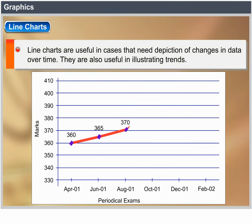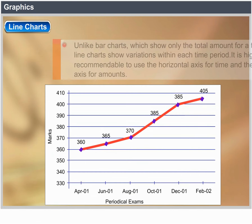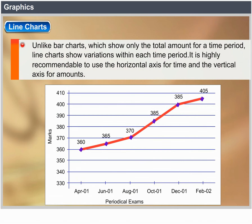Line Charts. Line charts are useful in cases that need depiction of changes in data over time. They are also useful in illustrating trends. Unlike bar charts, which show only the total amount for a time period, line charts show variations within each time period. It is advisable to use the horizontal axis for time and the vertical axis for amounts.